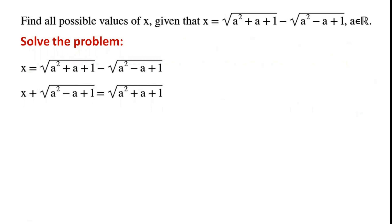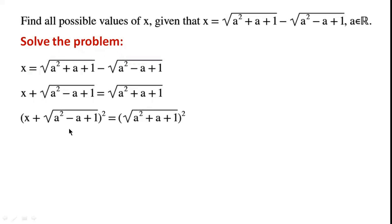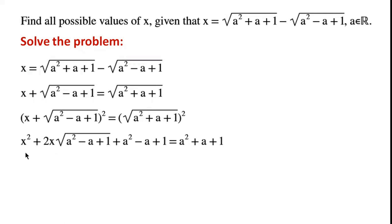By rearranging the equation, we can write x plus the square root of a squared minus a plus 1 equals the square root of a squared plus a plus 1. Next, we square both sides. The left-hand side becomes x squared plus 2x times the square root of a squared minus a plus 1, and the right-hand side becomes a squared plus a plus 1.